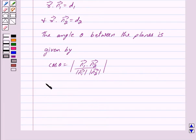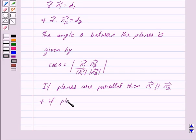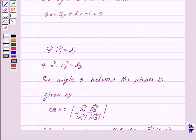Now if the planes are parallel, then vector n1 is parallel to vector n2, and if the planes are perpendicular, then vector n1 dot vector n2 equals 0. So this is the key idea behind our question.